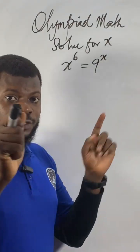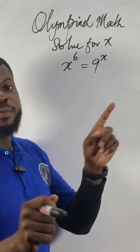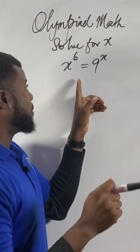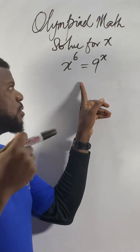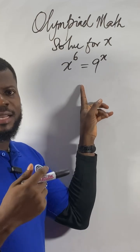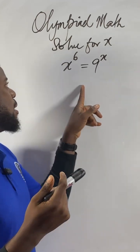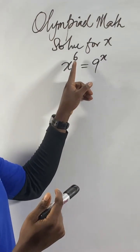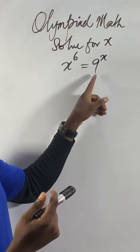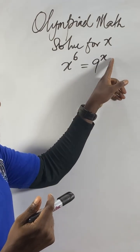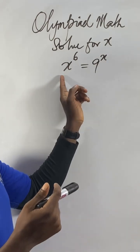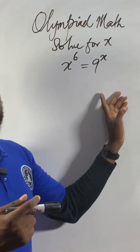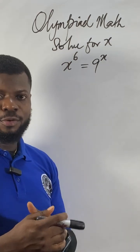That's the same reason we make other sources of this particular question. If you look at this, don't be saying that it doesn't make sense. They will say x to the power of six equals nine to the power of x. If you look at where you go.